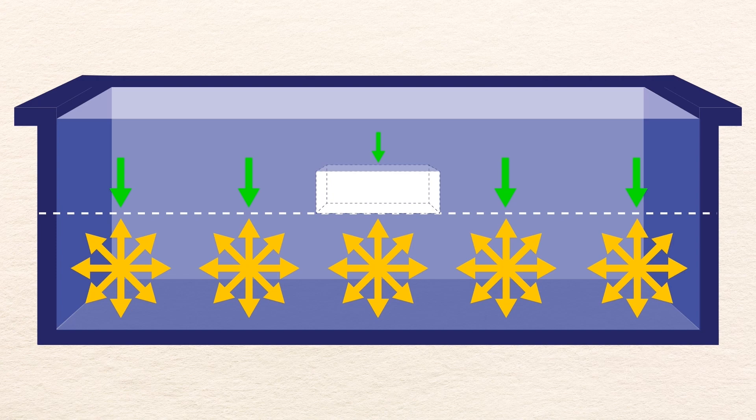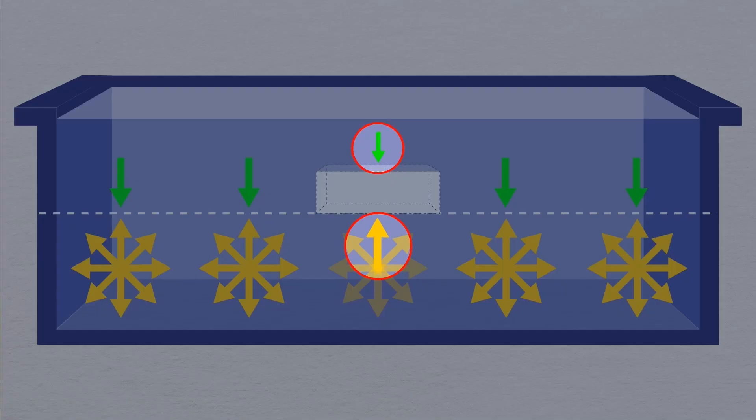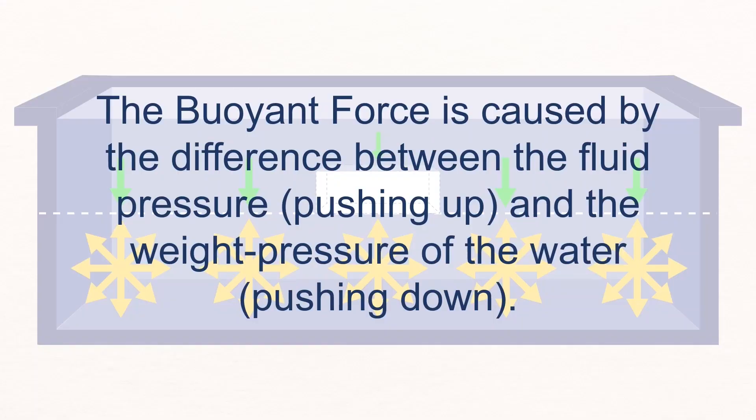Meanwhile, the fluid pressure below the magic void still matches the pressure in the rest of the pool. Since the fluid pressure pushing upward is larger than the weight pressure pushing downward, the net push is up. In short, the buoyant force is caused by this difference in the upward fluid pressure and downward weight pressure.